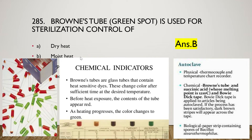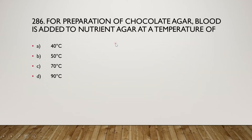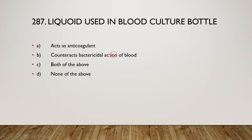The next question is: for preparation of chocolate agar, blood is added to nutrient agar at a temperature of (A) 40°C, (B) 50°C, (C) 70°C, or (D) 90°C. The right answer is option B — 50 degrees Celsius. In chocolate agar, blood is added to the nutrient agar at 50°C.